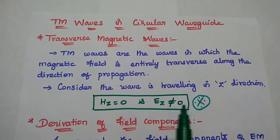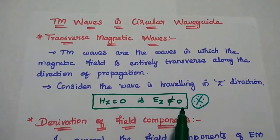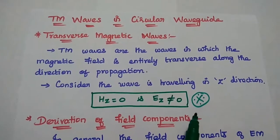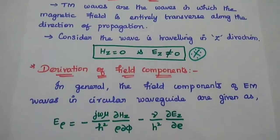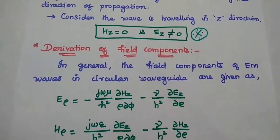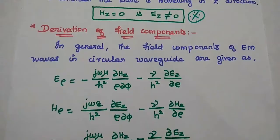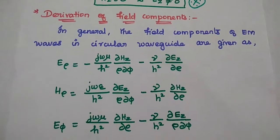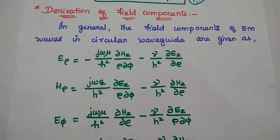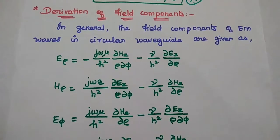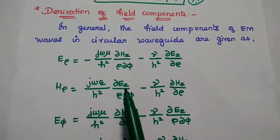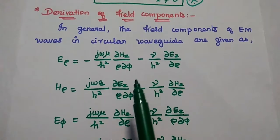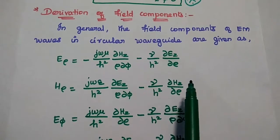HZ is equal to zero and EZ is not equal to zero if the wave is travelling in the Z direction. So next we are going to derive the field components of these TEM waves. We have already derived the general field components of electromagnetic waves in circular wave guide, and we are going to use those field equations to get the TEM waves field equations.